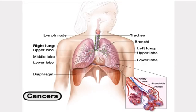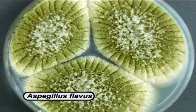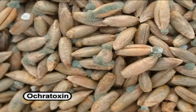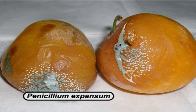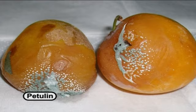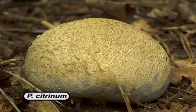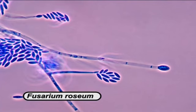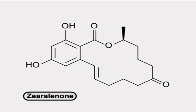Some fungi can produce heat-resistant mycotoxins which can even cause cancers in human beings. For example, Aspergillus flavus produces aflatoxin and ochratoxin. Penicillium expansum produces patulin. Penicillium citrinum produces citrinin, whereas Fusarium roseum produces zearalenone.